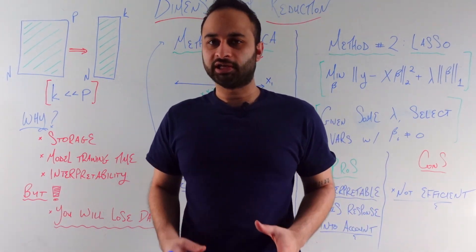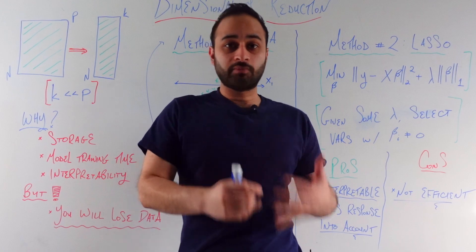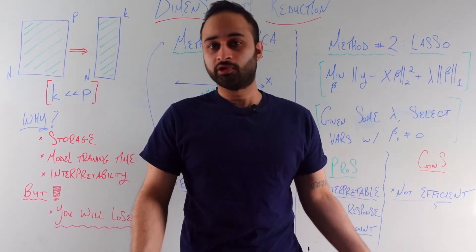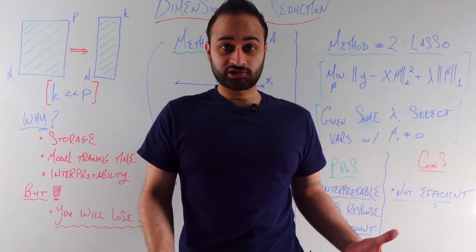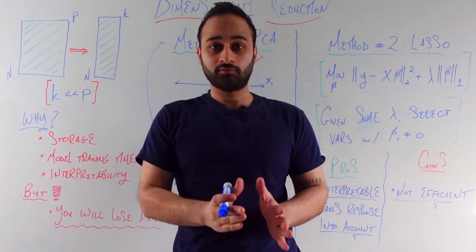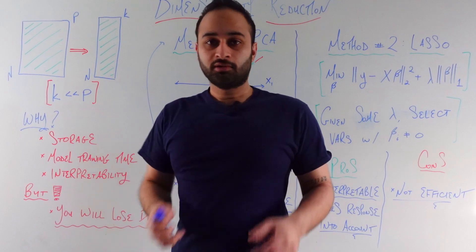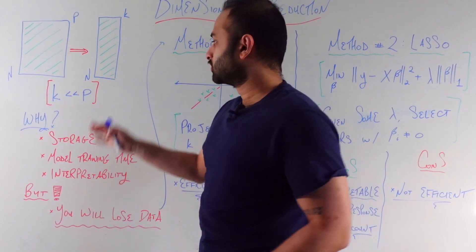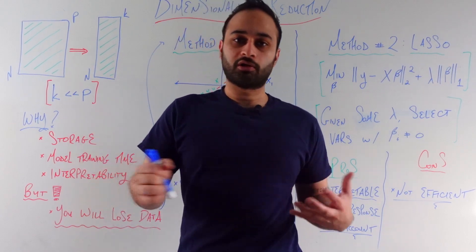Let's say you have some training data, which is n rows by p columns. So you have n observations and p features or predictors. The goal of dimensionality reduction is exactly what it sounds like: to get the number of dimensions, number of features, number of predictors, number of columns down significantly. So we're basically trying to go from an n by p matrix of training data to some n by k matrix of training data, where k is supposed to be much smaller than p.